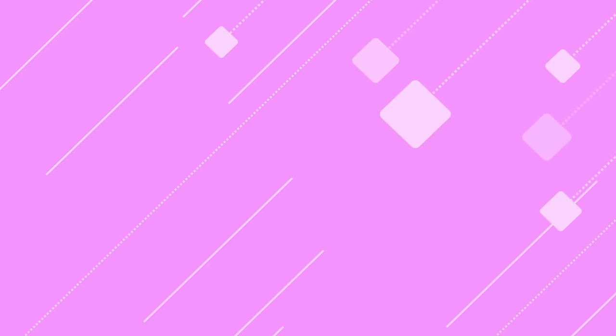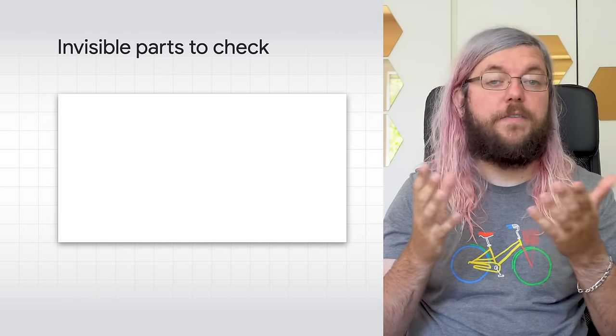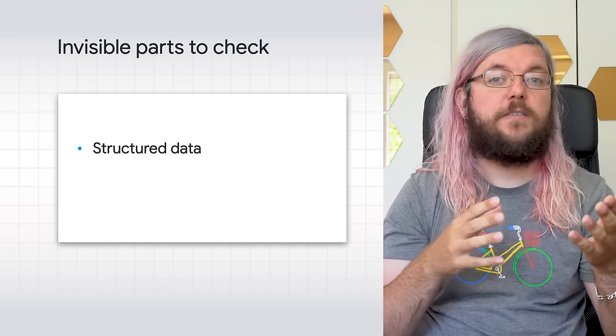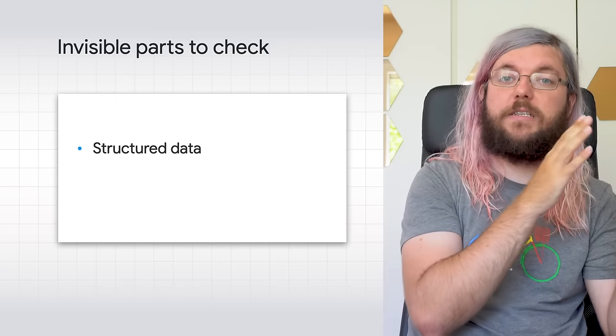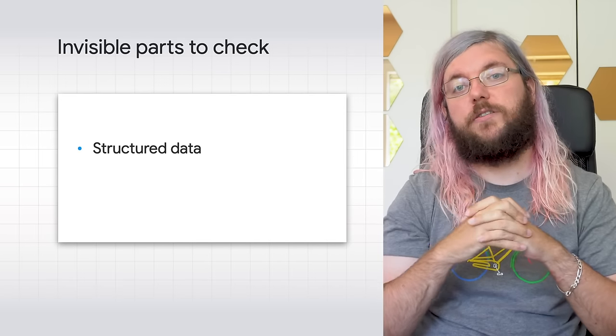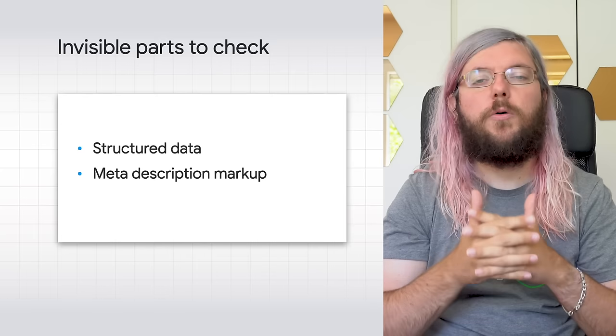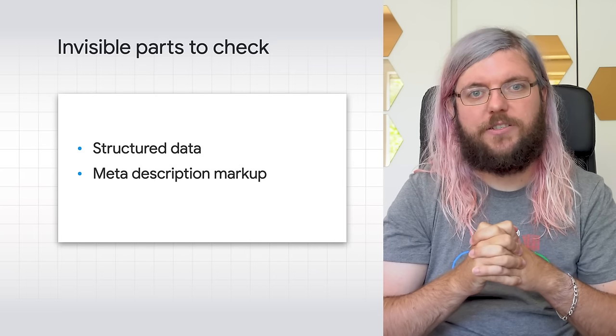Finally, it is better to do some extra checks for invisible parts of your page. They won't affect user experience, but they will affect how Googlebot understands them. One such example is structured data — we suggest you keep structured data the same on desktop and mobile pages. The other one is meta descriptions. Please don't forget to add them to your mobile pages; they matter a lot for Googlebot as well.